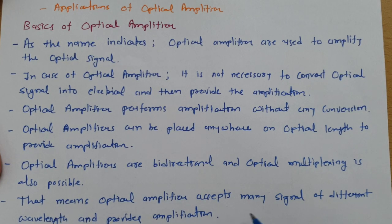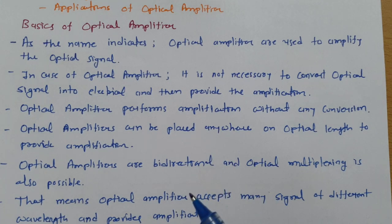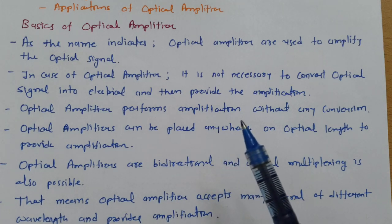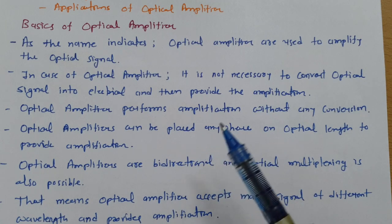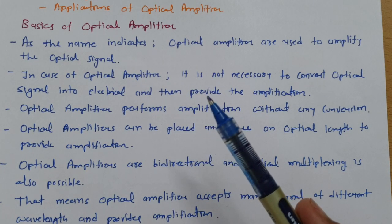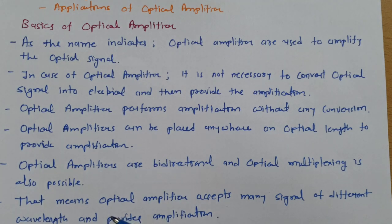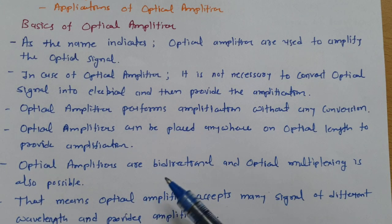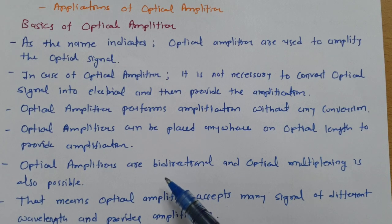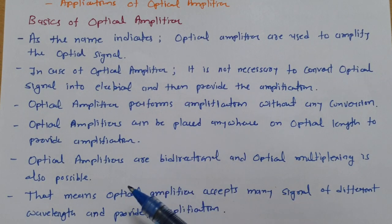To summarize the basics of Optical Amplifiers: the key principle is to amplify optical signals directly. We do not convert the optical signal to electrical and then amplify. We amplify the signal as it is in optical form. Additionally, Optical Amplifiers are bi-directional, and Optical Multiplexing is possible — they accept many wavelengths and provide amplification.